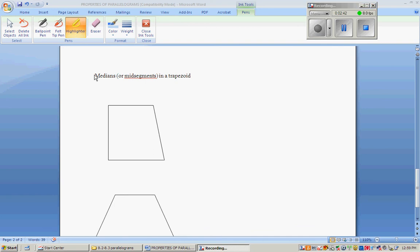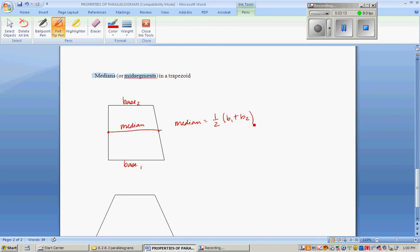The median, also called the mid-segment in some books, is the segment that's found exactly halfway along the two legs. It is the average of the two bases. So, if this is base one, and this is base two, and you want to find the median's length, you would just say the median equals one-half of base one plus base two.